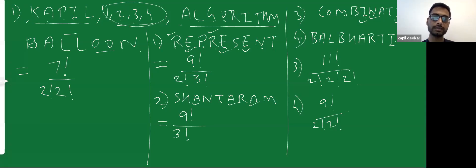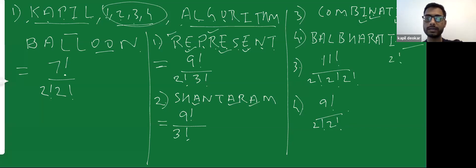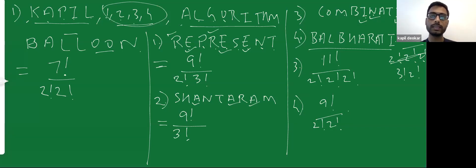Most of you got this correct. For Balparthi with the alternate spelling R-A-T-I giving 10 letters, the answer would be 10 factorial divided by 2! × 2! × 2!, or if A is repeating three times, then 10! divided by 3! × 2!. So if you wrote a different spelling, you get a different but still correct answer. The answer for Balparthi would be 10! divided by 3! × 2!.